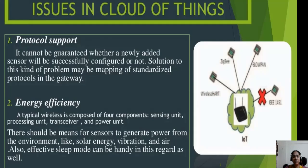The next issue is energy efficiency — how efficient your mechanism is. A typical wireless system is composed of four different components: a sensing unit, a processing unit, transceivers, and a power unit. These are the four things you have to consider when you talk about wireless technology.